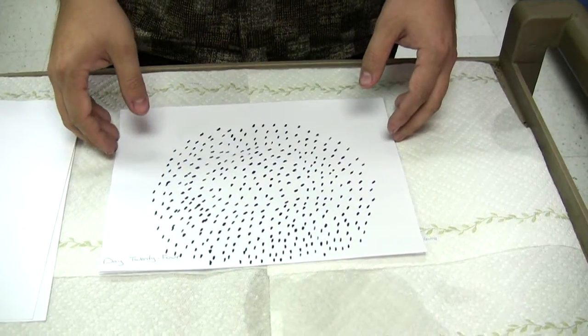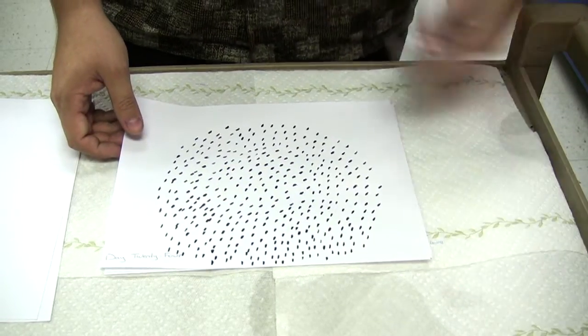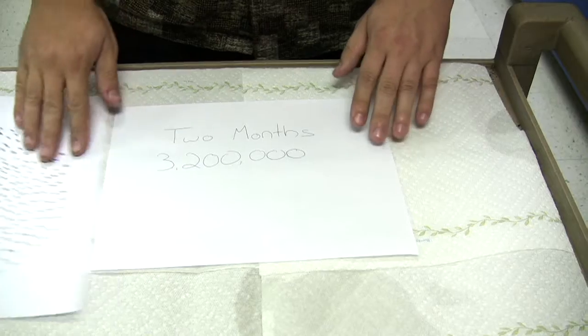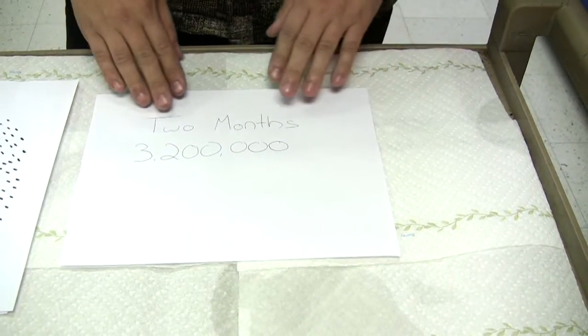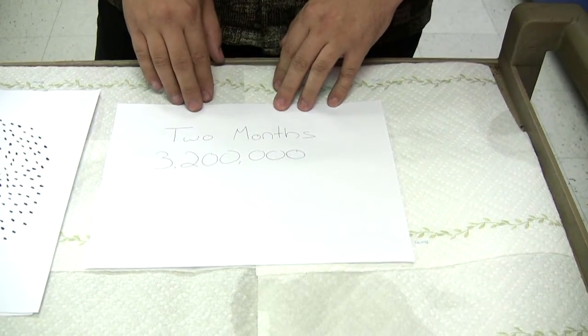As you can see, it multiplies quite fast, so on and so forth. Every 12 days you're multiplying your population by 20. So in two months, you could possibly reach about 3,200,000 flea population off of one adult flea.